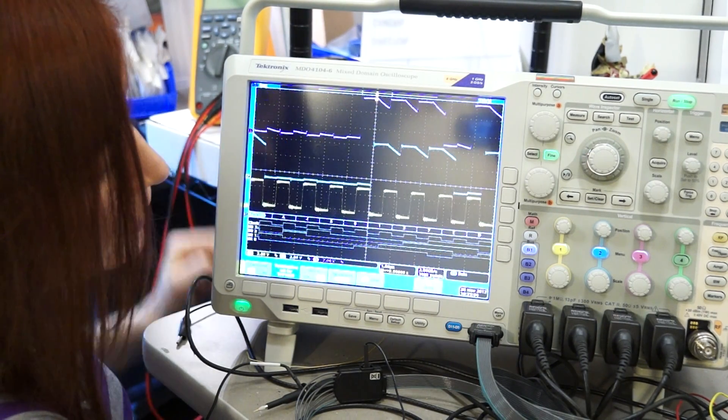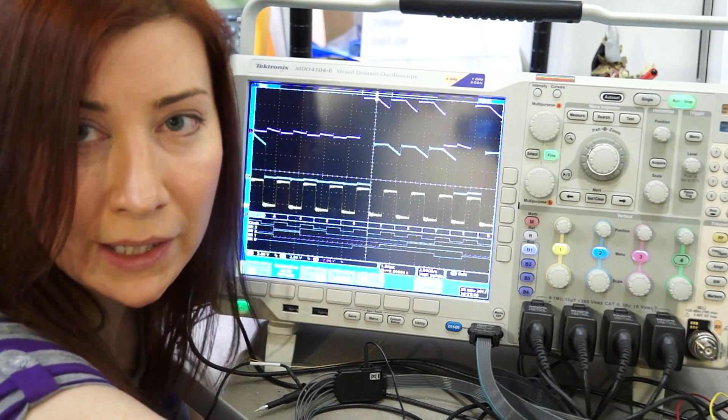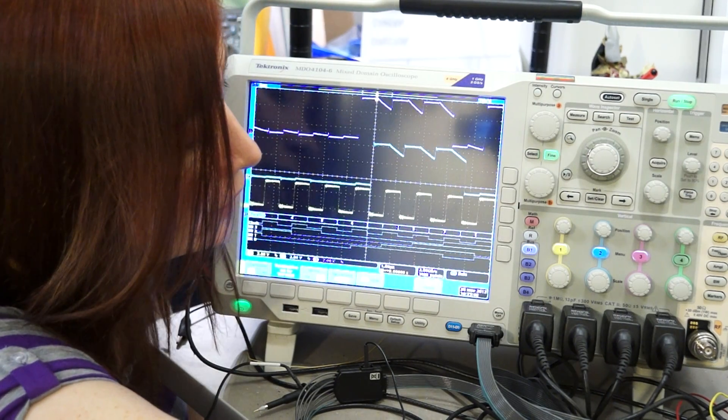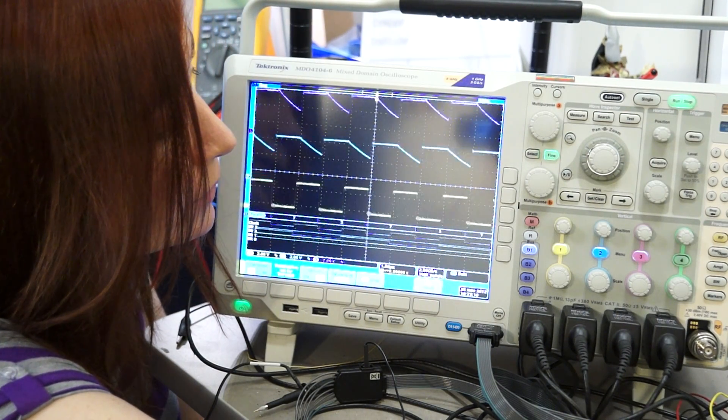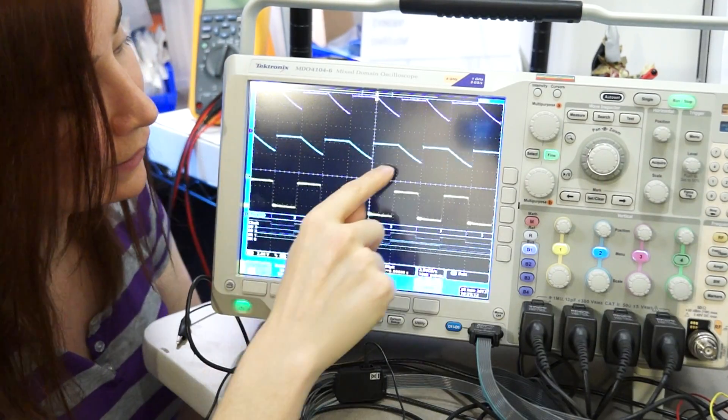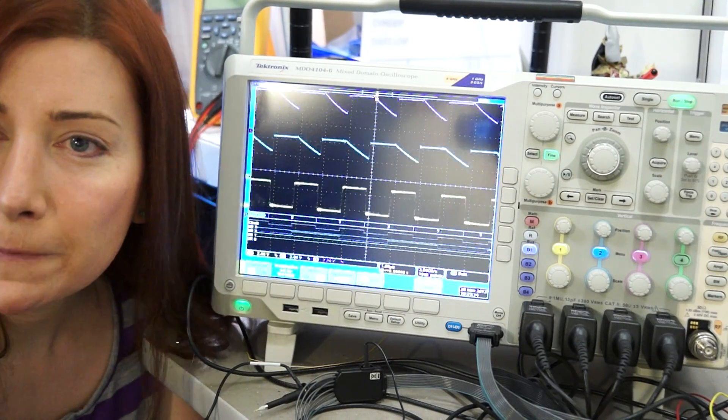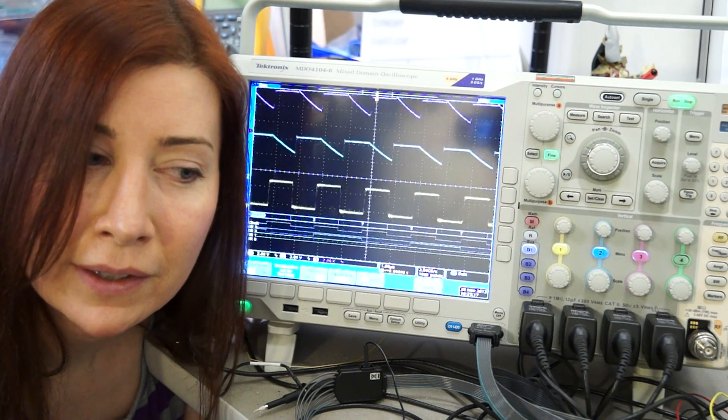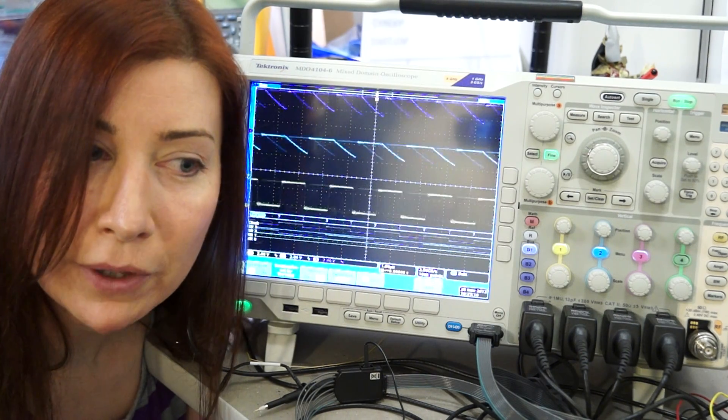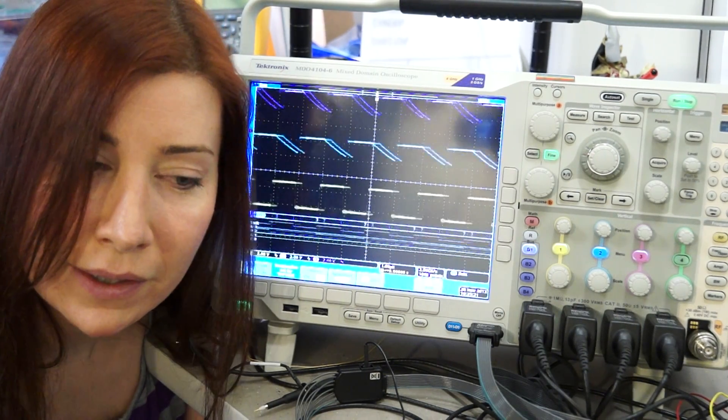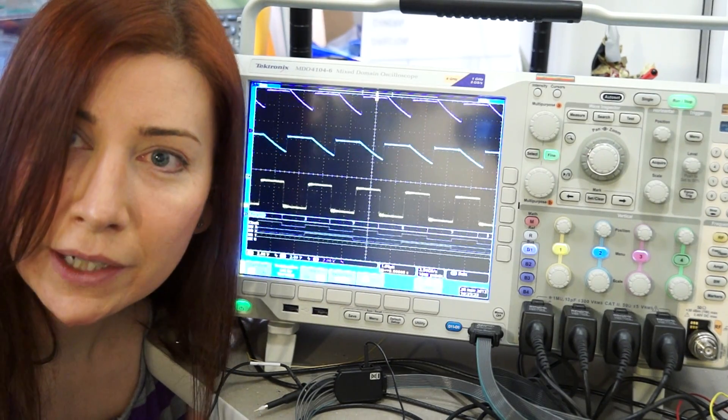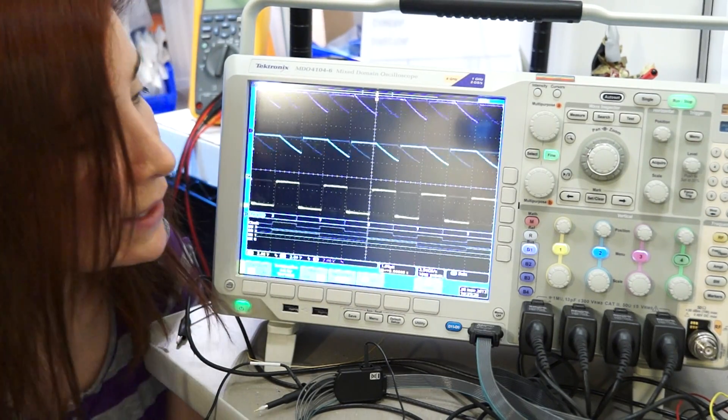If I get closer to the supply rail, I mean to the threshold, eventually this will fall on its face and quit working. There we go, it quit working. Since I'm using a CMOS part, it's 50% of the supply rail is the threshold. So, once you get below that threshold point, it doesn't see it as a 1 anymore and won't propagate to the next stage.